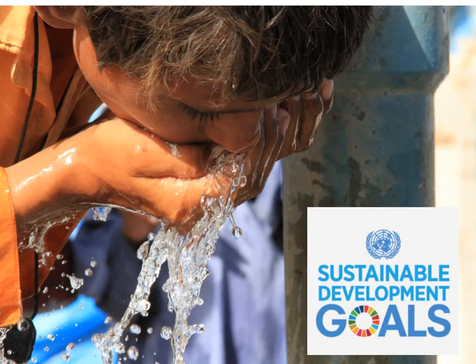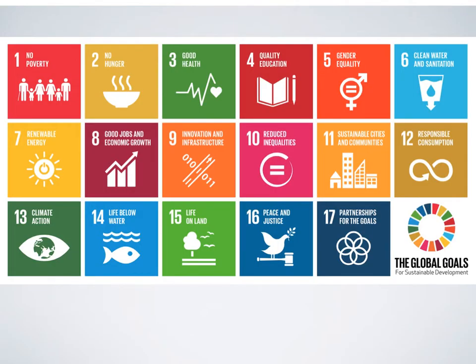This is being recognized at the global level in terms of what are known as the Sustainable Development Goals, which have replaced the Millennium Development Goals — many of which expired in 2015. There are 17 Sustainable Development Goals, ranging from poverty, hunger, health, and education, but most importantly to much of what we think about: clean water and sanitation. We want to understand exactly how these Sustainable Development Goals are going to dictate a lot of what we do as a collective society.